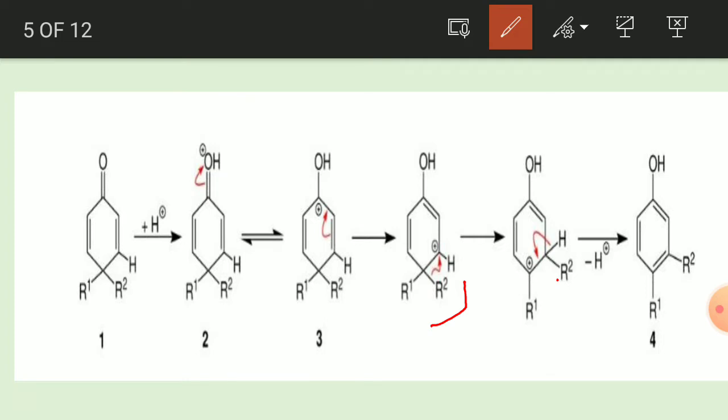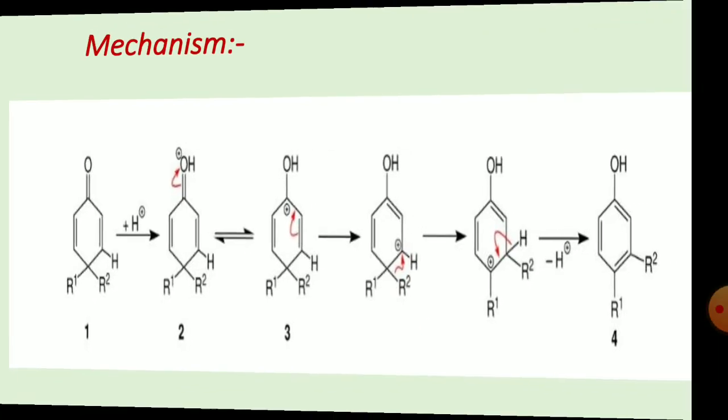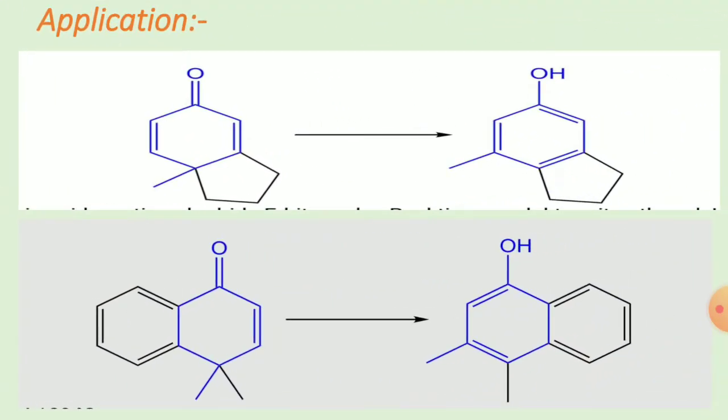The secondary carbocation is less stable than the tertiary, so the R group migrates and a tertiary carbocation is formed. In the last step, deprotonation occurs — removal of a hydrogen — and the phenol product is formed. The intermediate is a carbocation, and because tertiary is more stable than secondary, one R group migrates to form the stable tertiary carbocation.